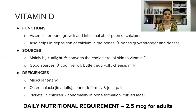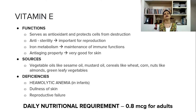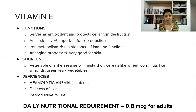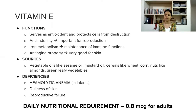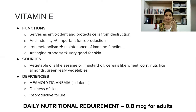The next fat soluble vitamin is vitamin E. Very, very important — it serves as an antioxidant, protecting cells from destruction. It has anti-sterility properties, so it is essential for reproduction. Also essential for iron metabolism and to boost your immunity. Very importantly, it is essential for good skin and good hair, and has anti-aging properties. Normally, vitamin E capsules are applied on skin to make it glow.